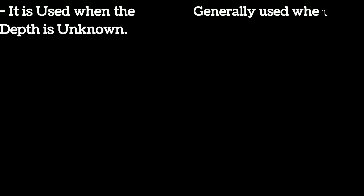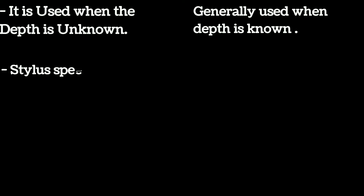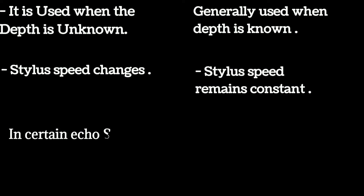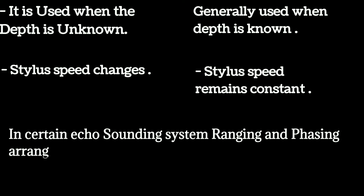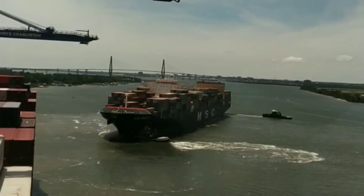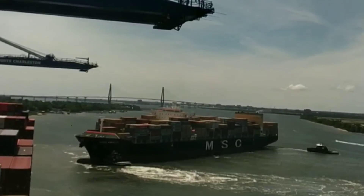Ranging is used when the depth is unknown, whereas phasing is generally used when the depth is known. The stylus speed changes in ranging, while the stylus speed remains constant in phasing. In certain echo sounding systems, ranging and phasing arrangements are used in combination, and this is known as phased ranging.